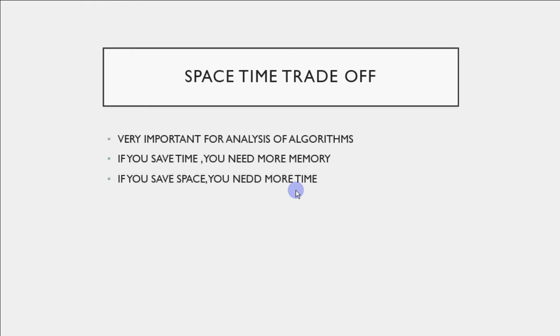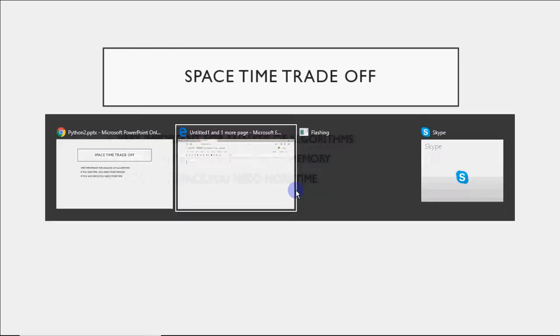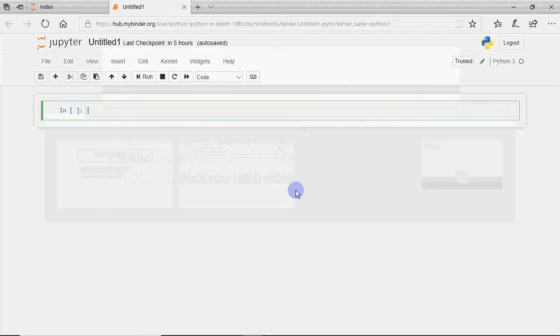The second one was where we were not using the third variable. So we were saving the memory, but it performs three arithmetic operations and then assigns the value. So it will take more time to execute the code. So that's how we differ in space and time management. So you can save one of them. It's your choice. What do you save?